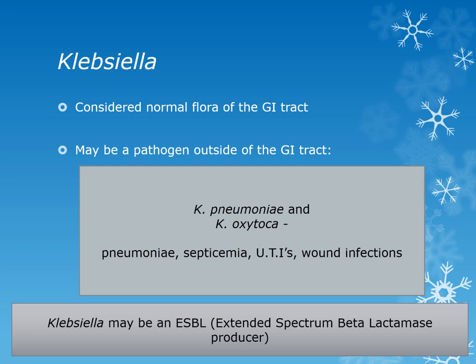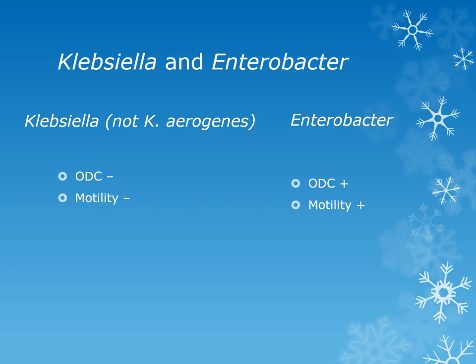Klebsiella is considered normal flora of the gastrointestinal tract and may be a pathogen outside the GI tract. Klebsiella pneumoniae and Klebsiella oxytoca can cause pneumonia, septicemia, urinary tract infections, and wound infections. Klebsiella pneumoniae is the most common Klebsiella isolated in pneumonia cases. Like E. coli, Klebsiella can also be an ESBL producer. In the comparison with Enterobacter: all Klebsiella are ornithine decarboxylase negative and motility negative — except Klebsiella aerogenes, which is ODC positive and motility positive — while Enterobacter are ODC positive and motility positive.